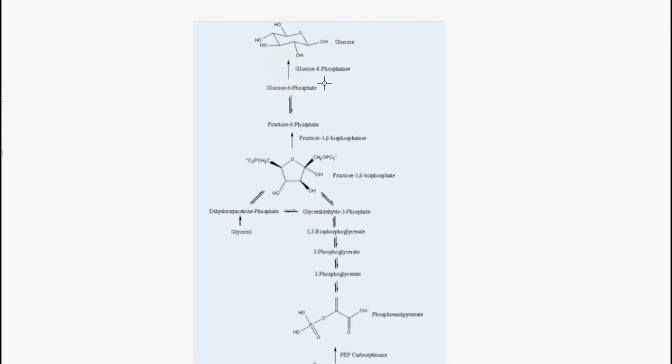This bypasses the irreversible hexokinase reaction of glycolysis. An important thing to note is the liver and kidneys are the only organs which produce this free glucose, so they have this glucose 6-phosphatase available.